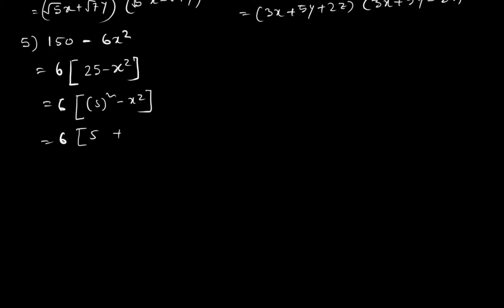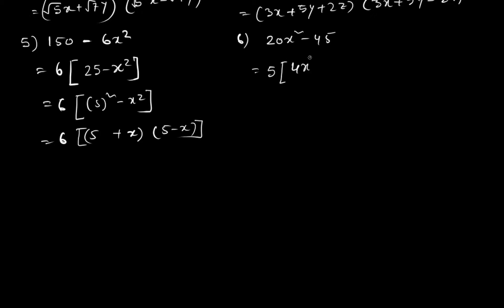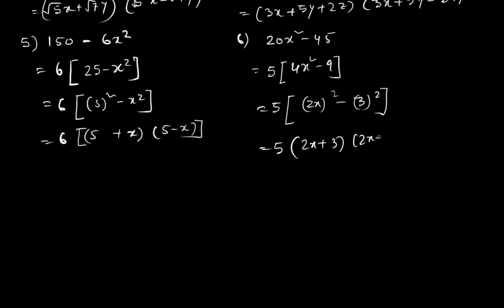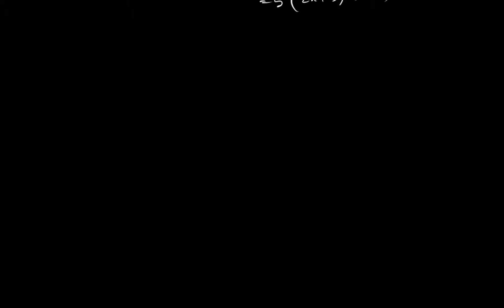Question 6 is 20x² - 45. We can take 5 out, leaving 4x² - 9, which is a difference of two perfect squares: (2x)² - (3)². Applying the formula gives 5(2x + 3)(2x - 3).